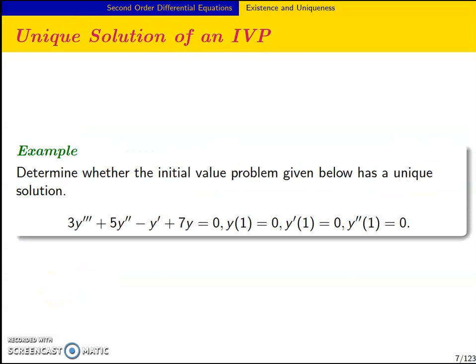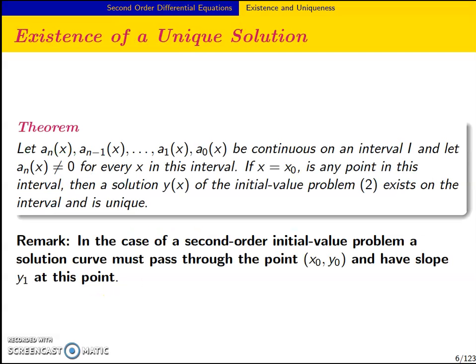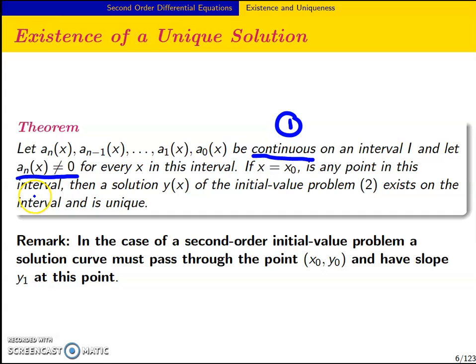Let's look at what this means by examining an example: to determine whether the initial value problem given below has a unique solution. To check, we apply the theorem. The theorem says that a_n must be continuous — that's the first condition we check for uniqueness. And then a_n(x) must not equal zero.